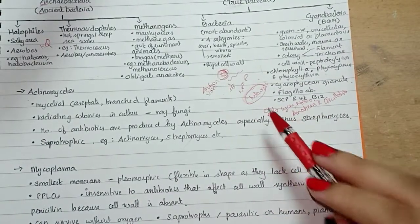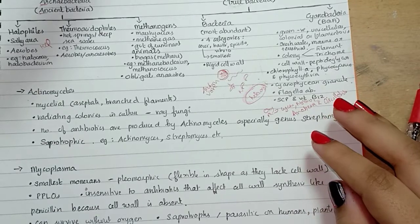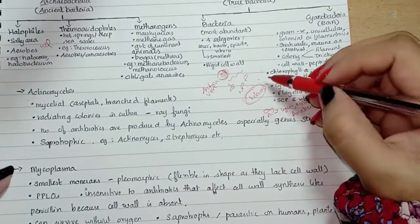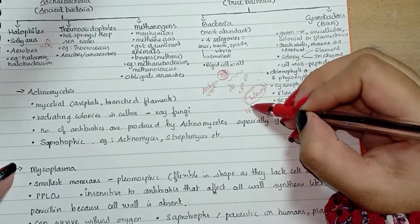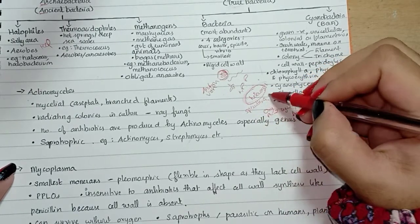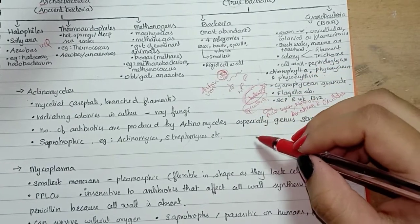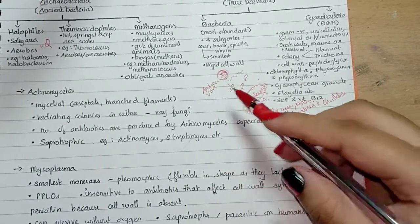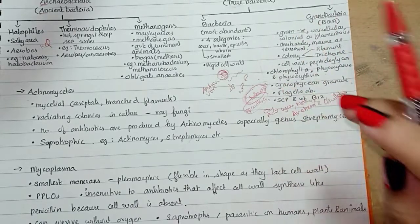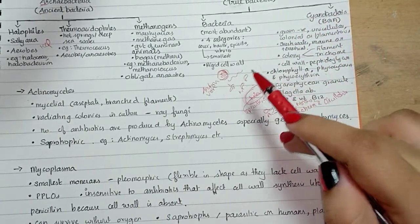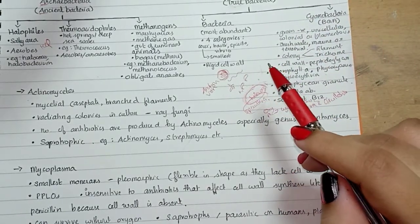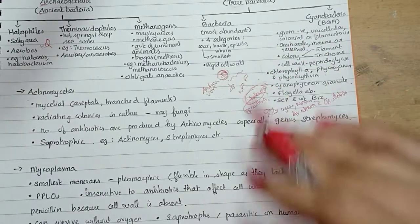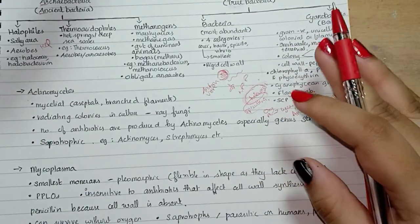Spirulina has great nutritional value and is a good source of single cell protein (SCP) and vitamin B12. This is very important — spirulina is of great nutritional value due to its SCP and vitamin B12 content.